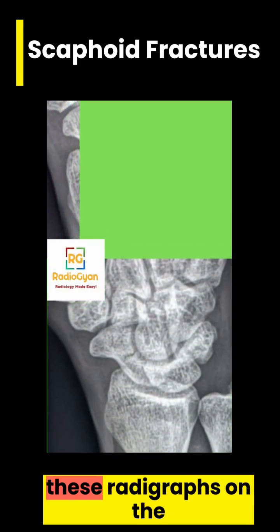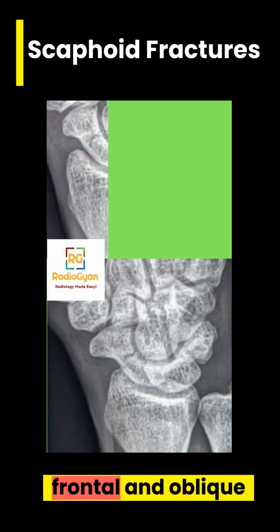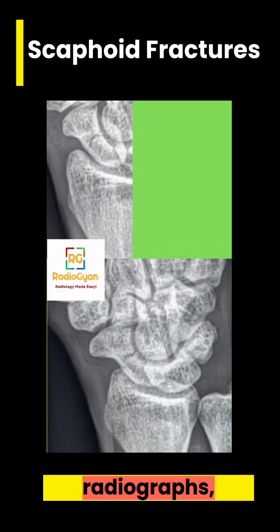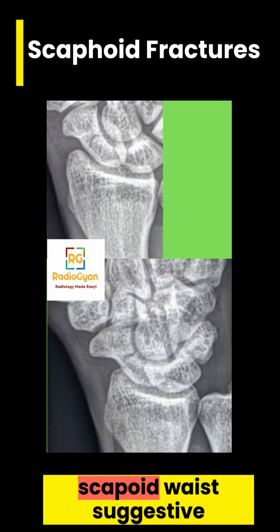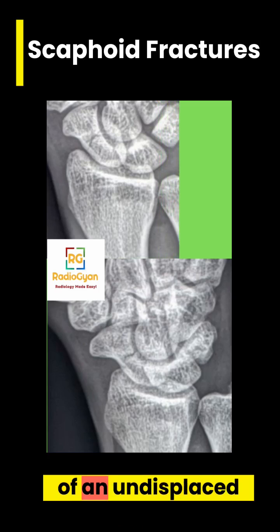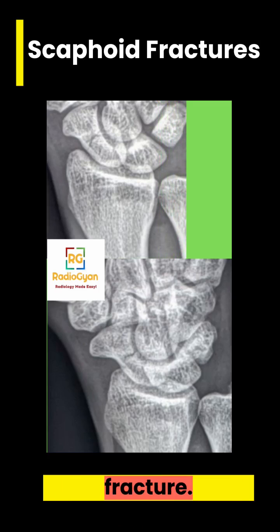If you carefully look at these radiographs, on the frontal and oblique radiographs there is a linear lucency involving the scaphoid waist, suggestive of an undisplaced fracture.